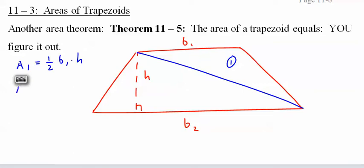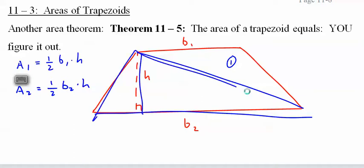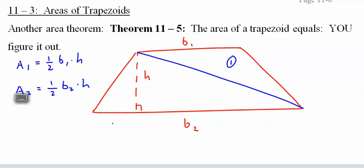We can do the same thing for the other one. It's just this base, this height, and there's our triangle. So that's it, we're done. And I just add them together.